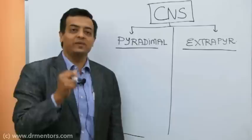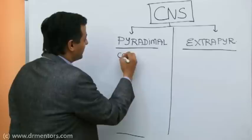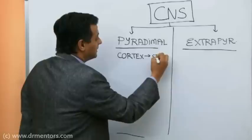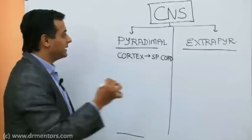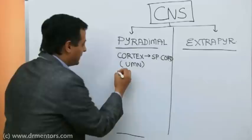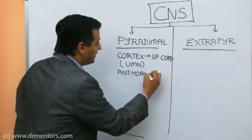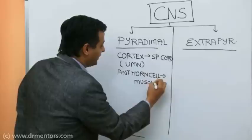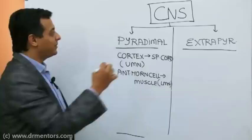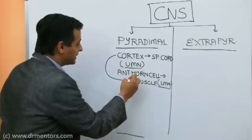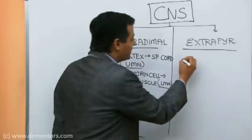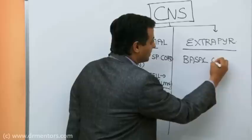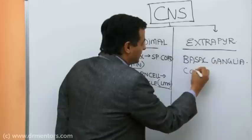The first step is to differentiate whether the lesion is in the pyramidal tract or the extrapyramidal tract. The pyramidal system extends from the cortex to the spinal cord — that is the upper motor neuron part — and from the anterior horn cell to the muscle, which is the lower motor neuron part. So the pyramidal tract starts from the cortex and ends at the muscle.